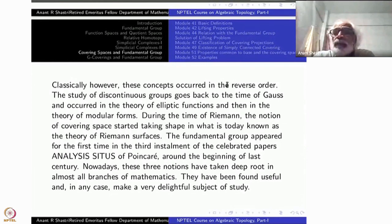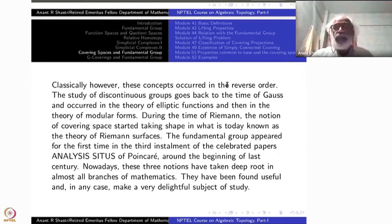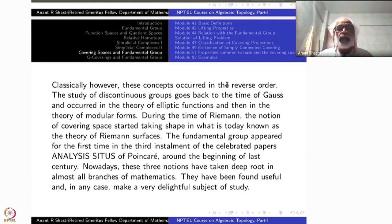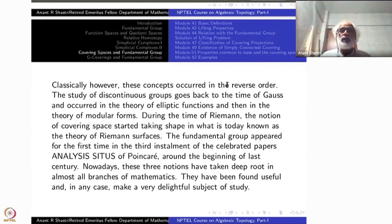One can cite examples going back to Gauss, then the theory of elliptic functions by Abel and Weierstrass. During the time of Riemann, the notion of covering spaces started taking shape — in fact, Riemann introduced even the notion of manifolds, and covering spaces appeared in his work on Riemann surfaces of algebraic functions. The fundamental group appeared much later in Poincaré's work. One can give great credit to Poincaré for putting various things together. Nowadays these three notions have taken deep root across all branches of mathematics.